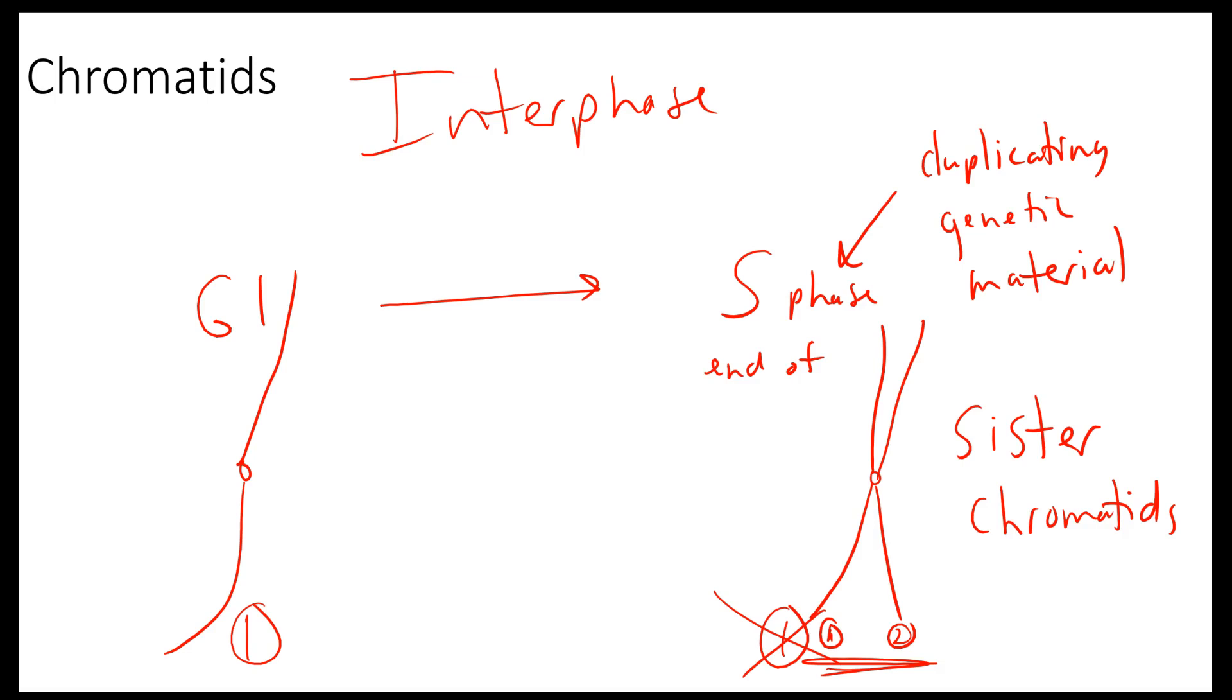So in S phase, G2, M, prophase, metaphase, all the stages of M phase of mitosis, you're going to see those sister chromatids until in anaphase, you separate them. And then we go back to being called chromosomes. So chromatid, another complex word.